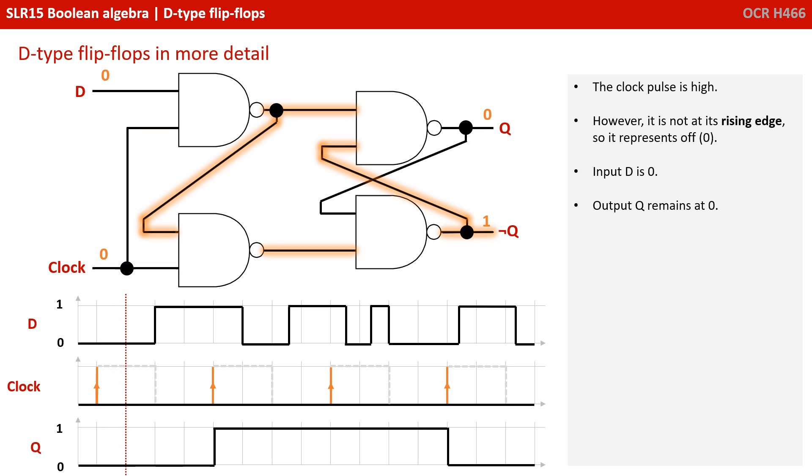Here, the clock pulse is high, however, we're not at the rising edge, so it's representing zero. Input D is zero and output Q remains zero.